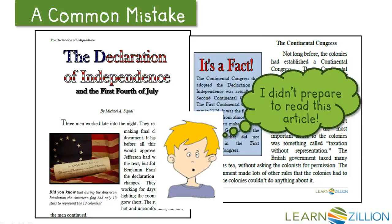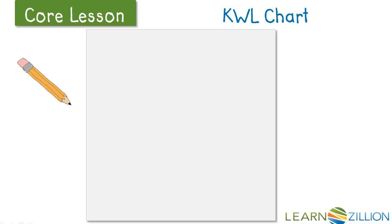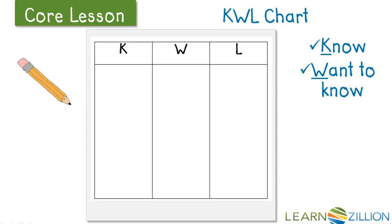Sometimes what we already know can help us better understand a topic. In this lesson we will use a KWL chart. A KWL chart can help you organize your thinking and keep track of your learning. On a piece of paper or in your reader's notebook, draw a chart with three columns titled K-W-L. The K stands for Know — this is where you jot what you already know. W stands for what you want to know. And L stands for what you learned after reading the article. We will only focus on the first column, what we already know.